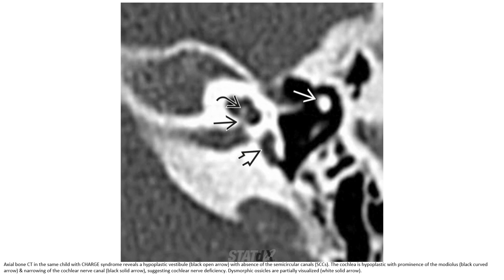Axial bone CT in the same patient with CHARGE syndrome reveals a hypoplastic vestibule with absence of semicircular canals. The cochlea is hypoplastic with prominence of the modiolus and narrowing of the cochlear nerve canal, suggesting cochlear nerve deficiency. The morphic ossicle is partially visualized.